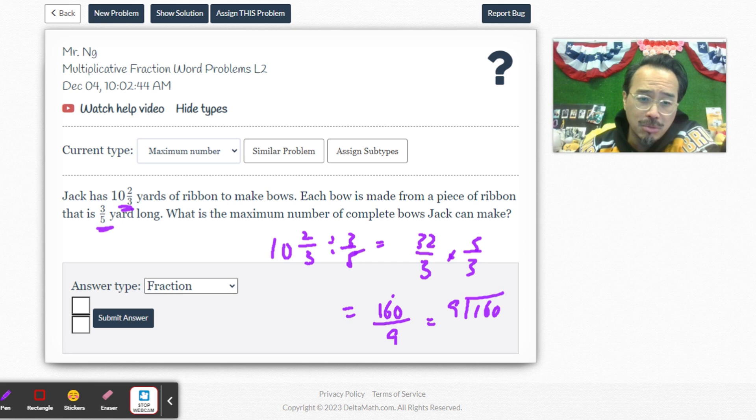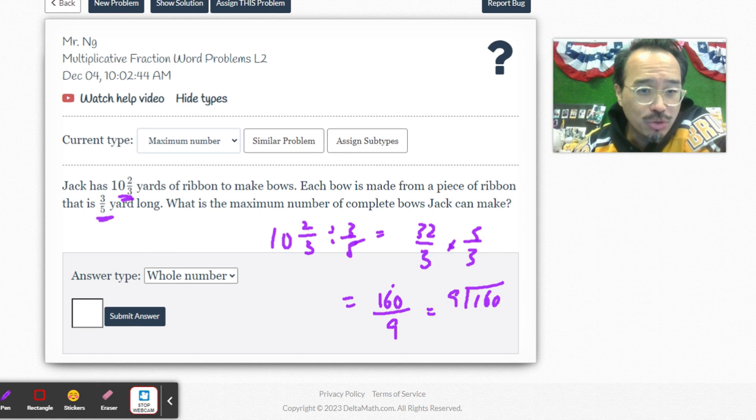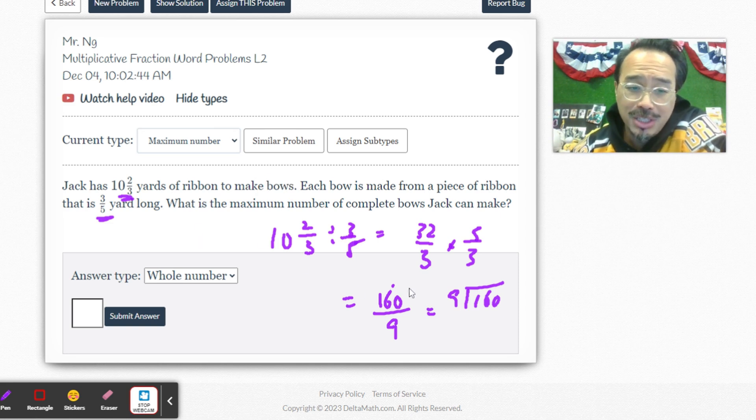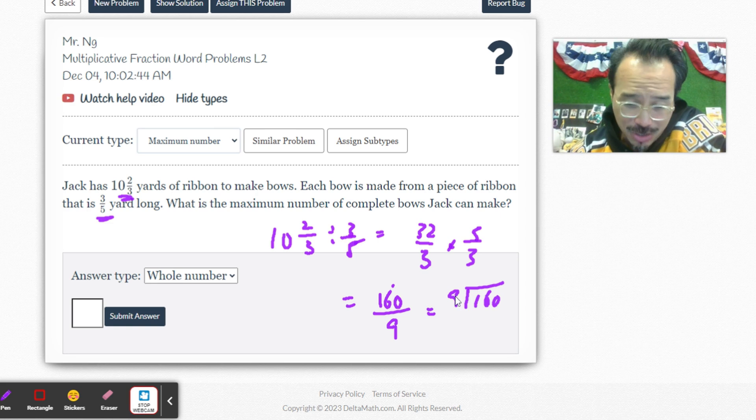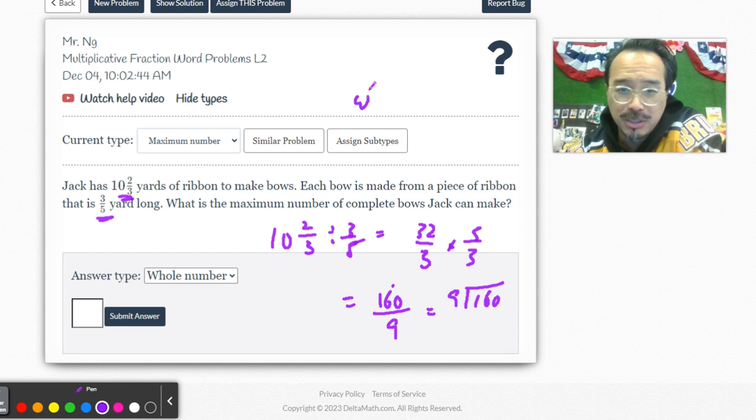Which also means that you will have leftover ribbon, but you're not going to use the leftover ribbon to make a bow. That's what it's suggesting. So we need the whole number to see how many times nine can wholly go into 160.